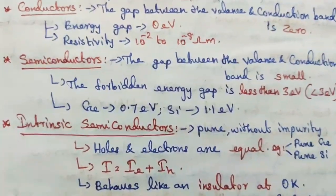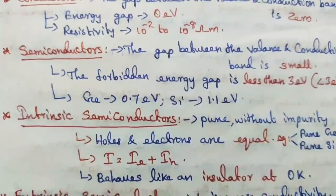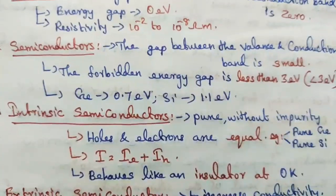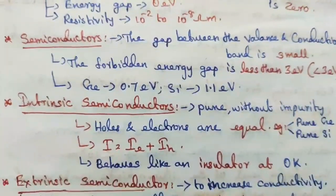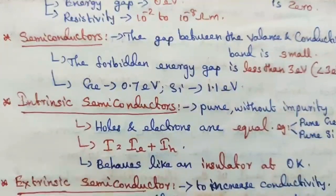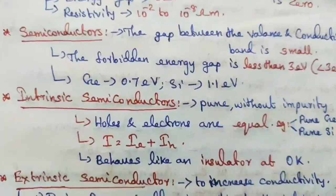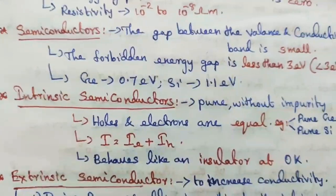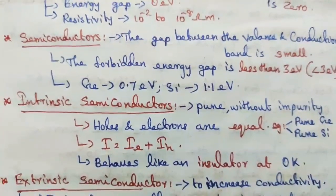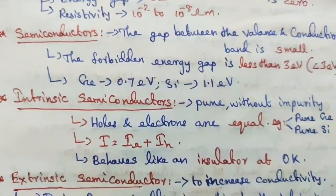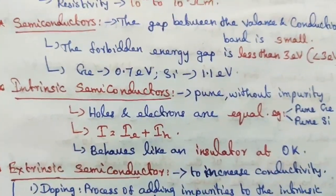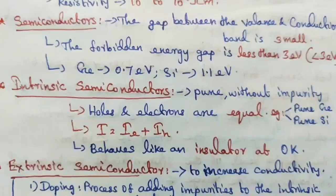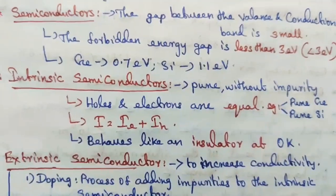Intrinsic semiconductors are pure without impurity. Here holes and electrons are equal. Examples are pure germanium and pure silicon. The total current produced by the semiconductor is equal to the sum of electron current and hole current: I equals IE plus IH. Intrinsic semiconductors behave like an insulator at 0 Kelvin temperature.